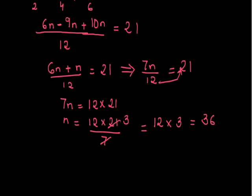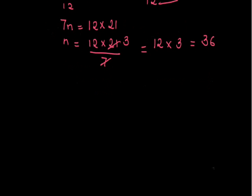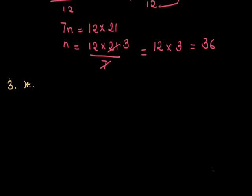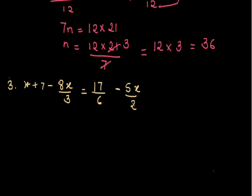So the value of n is 36. The next question — third question: x plus 7 minus 8x upon 3 is equal to 17 upon 6 minus 5x upon 2.